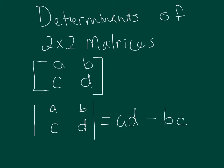And that's how you get the determinant of a 2 by 2 matrix. So if we had numbers in this, say we had the numbers 3, negative 2, 5, and 7.